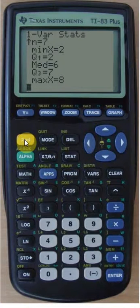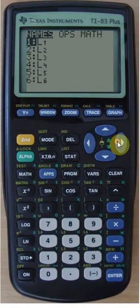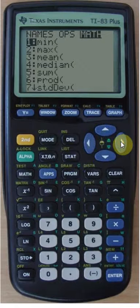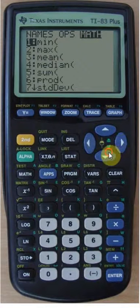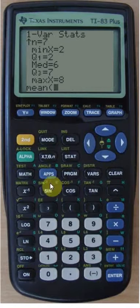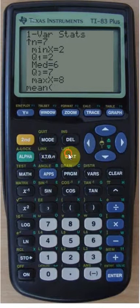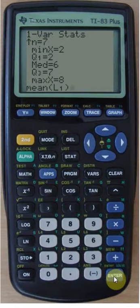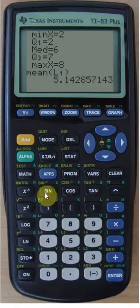Another way of getting the mean and the median is second list and then go for the math. And there is mean which is actually the third option. Enter. And again second list and then list 1, close the parenthesis and the mean is still 5.14.